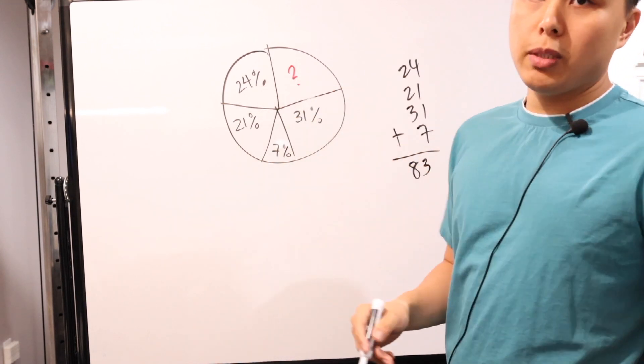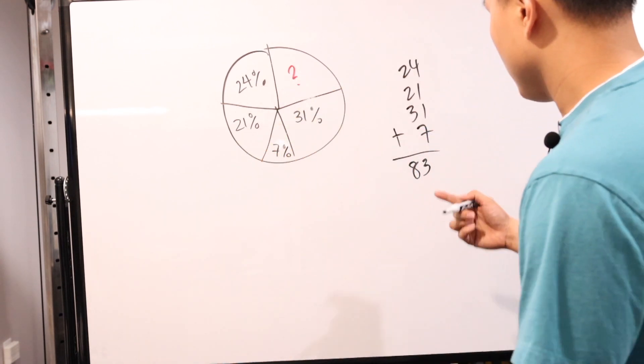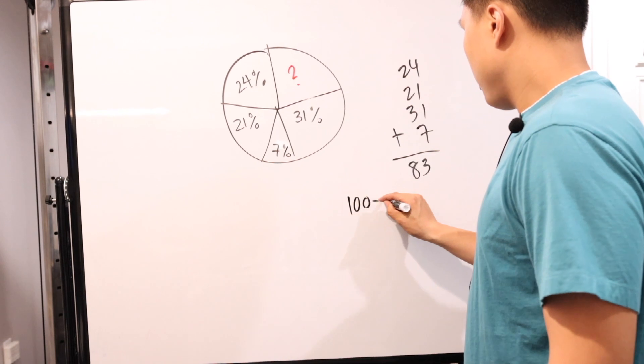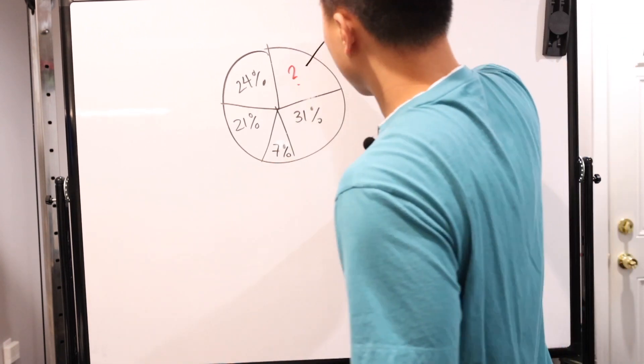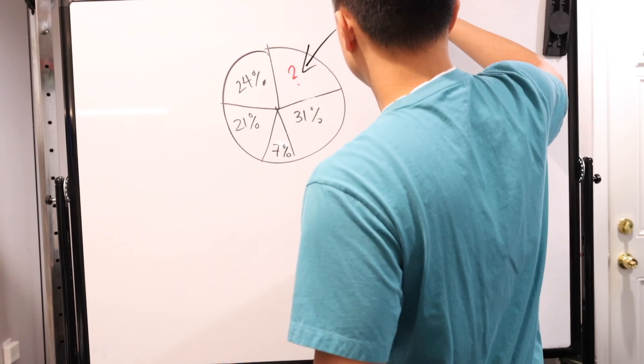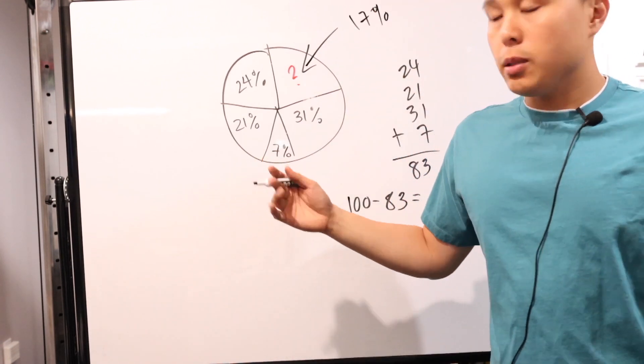So in this case, what is 83? That's these guys. So what is the missing one? We know that's a hundred percent. So if you really want to, you can do a hundred minus 83, or in your head, and then you know that's 17. So this missing number right here, even though not drawn to scale, is 17%. Okay. Plain and simple.